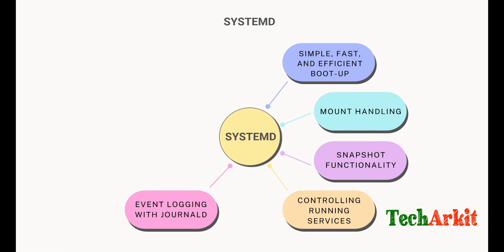For event logging, systemd integrates with journald, which provides centralized logging and advanced filtering capabilities. In previous versions, INIT used syslog. With journald, you can apply much more granular filters based on errors, warnings, and other criteria using the 'journalctl' command.